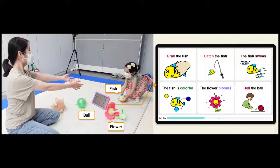Captivate is a tablet application that helps parents interact with their child by displaying context-relevant and real-time language guidance. In this video, we describe the motivation, design process, and evaluation of our system.